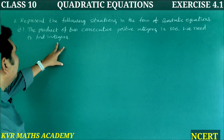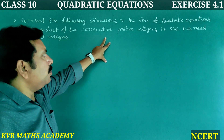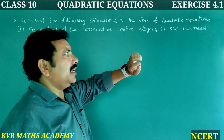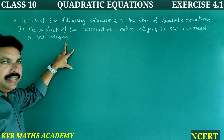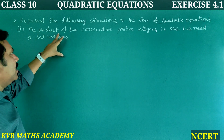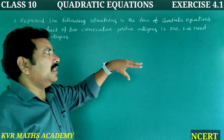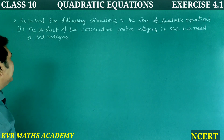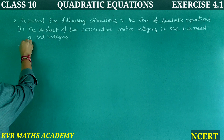Next, second question: The product of 2 consecutive positive integers is 306. We need to find the integers.